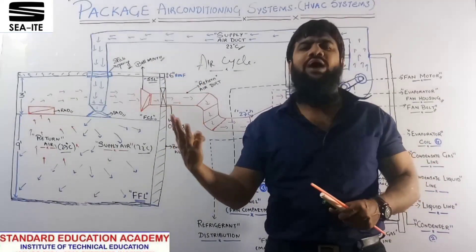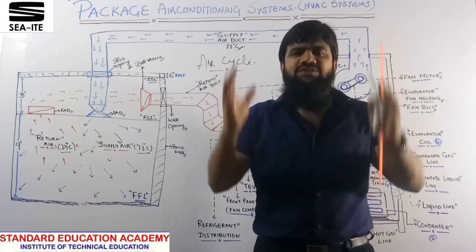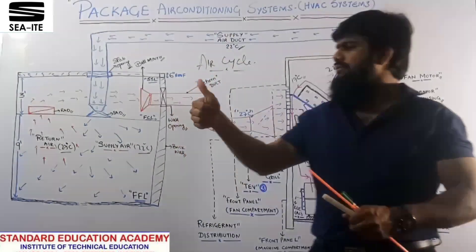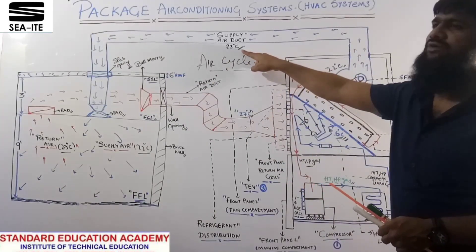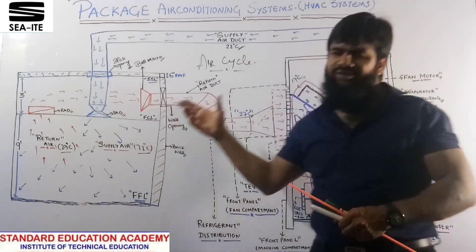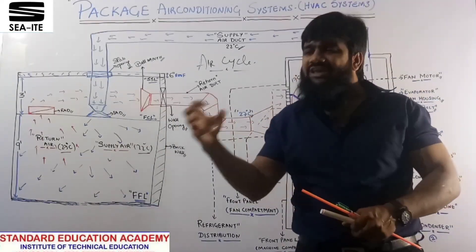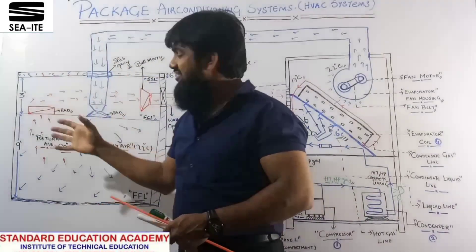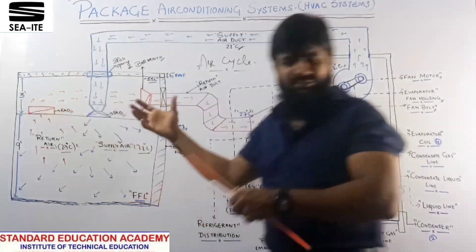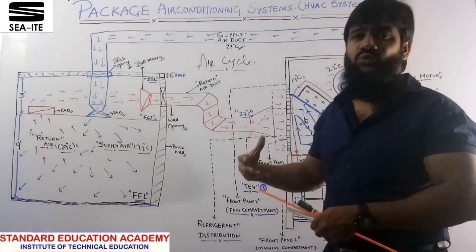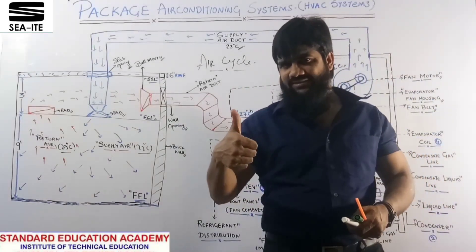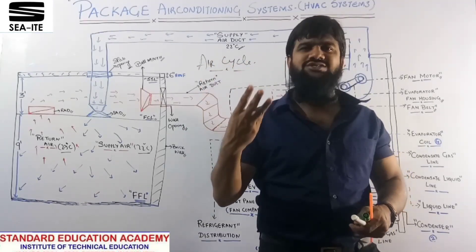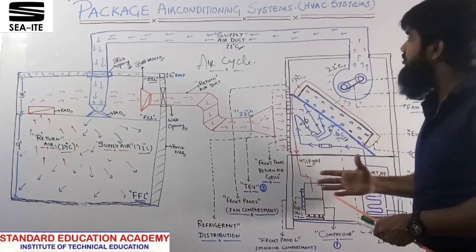With these two cycles we achieve three things required for any HVAC system. Point one: temperature control — we maintain temperature at 22°C. Point two: humidity control — humidifiers can be placed within the system to maintain proper humidity in the room. Point three: pressure — we can arrange a fresh air duct of 10 to 15 percent to provide proper indoor air quality. If any system meets these three requirements — temperature control, humidity control, and pressure — that is a perfect HVAC system.